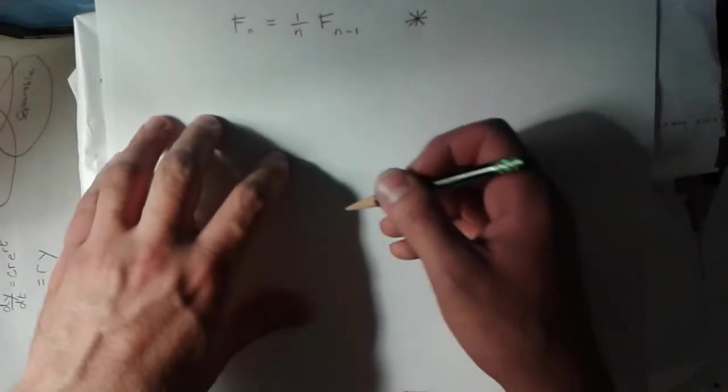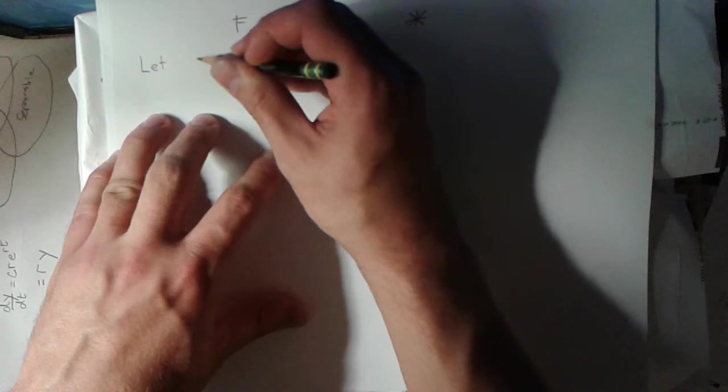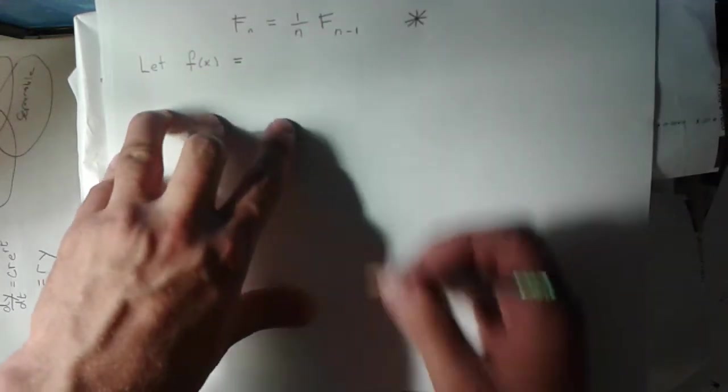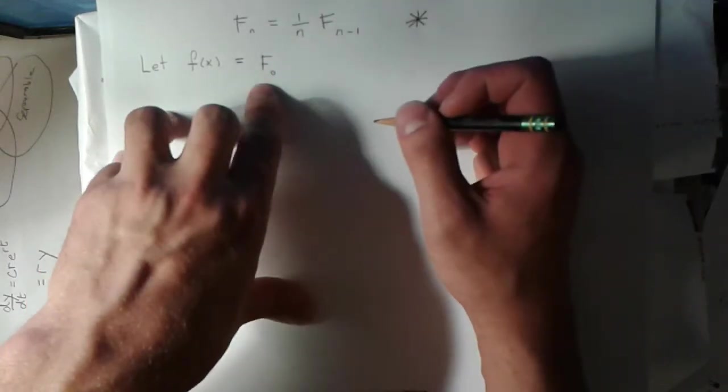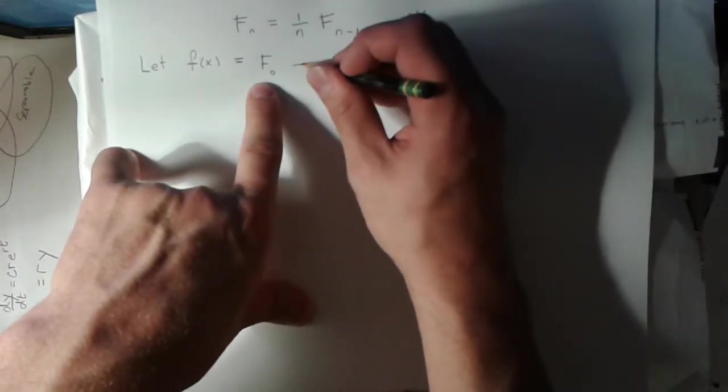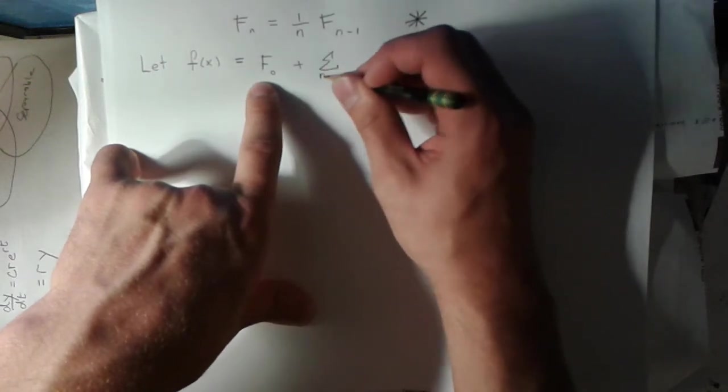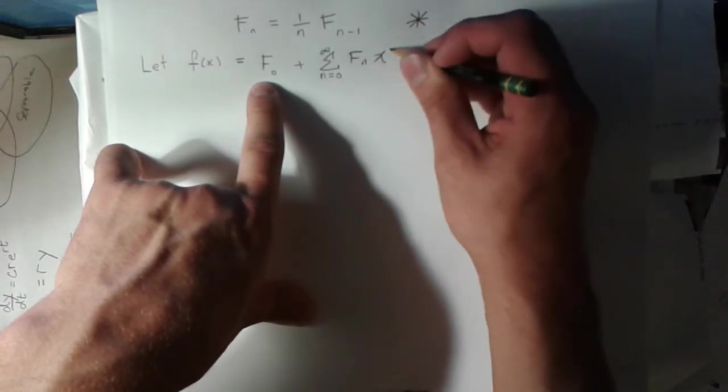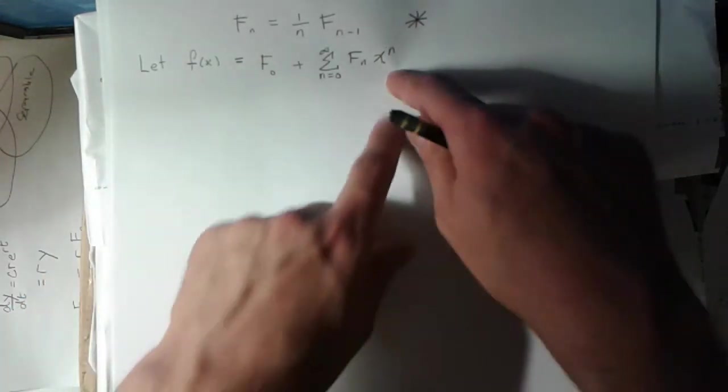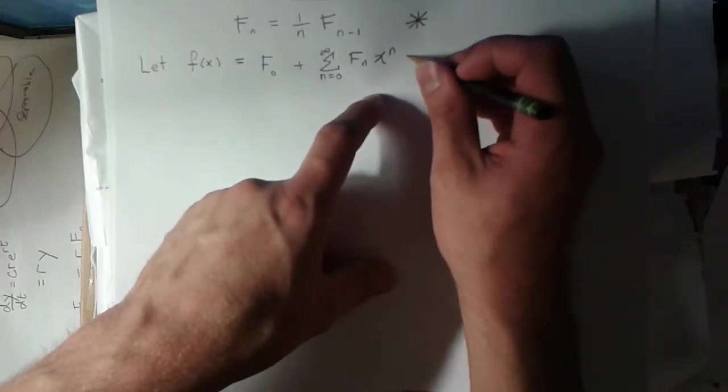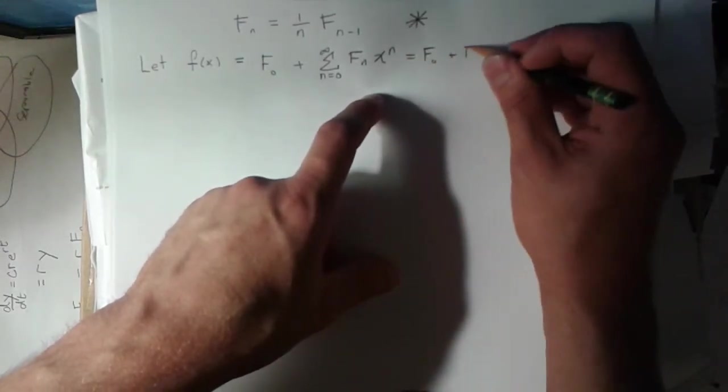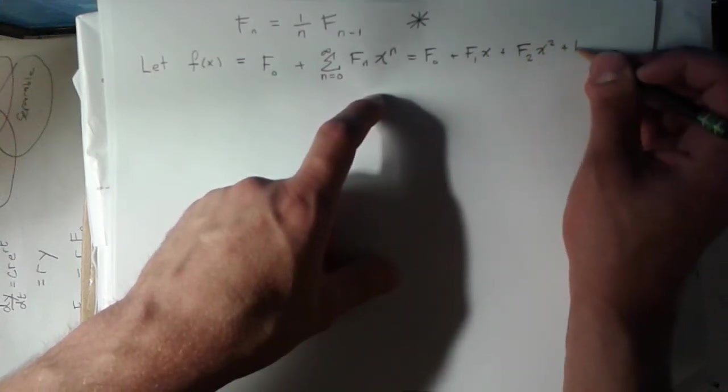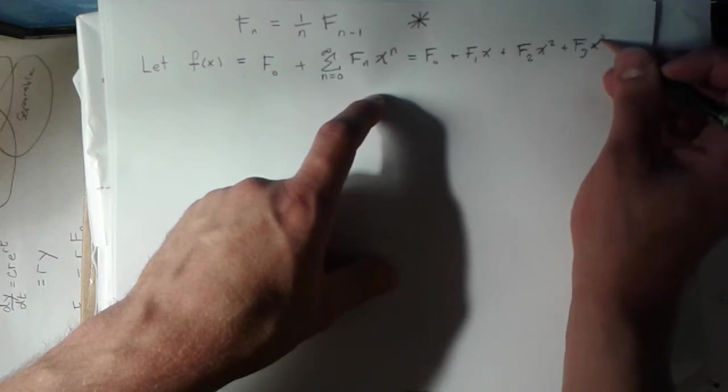What I'm going to do is define a function f of x. I'm going to say that this is the zeroth term of the sequence plus the rest of them, but I'm going to multiply them by x to the n terms. So it's going to be f0 plus f1x plus f2x squared plus f3x cubed, etc.